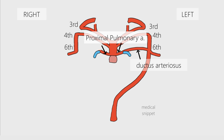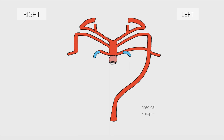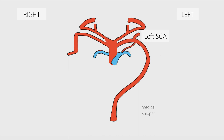After the partition of the truncus arteriosus, the main pulmonary artery develops from the pulmonary trunk. As the heart shifts caudally during development, the left subclavian artery origin shifts higher, close to the origin of the left common carotid artery. This completes the development of the aortic arches.